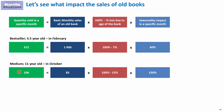On the other hand, if we look at a medium book that is 11 years old in October, we have different parameters: the basic monthly sales are not 1,000 but 83, the reduction due to age is 15% instead of 7%, and the seasonality impact is 150% rather than 40% — meaning October is well above the average month — giving 106 pieces sold in October. The general idea is to divide into two groups — new books and old books — and then divide each group into categories.